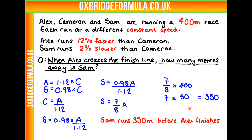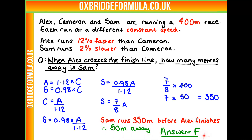So Sam runs 350m when Alex finishes the race. That means Sam is only 50m away. That's our final answer — answer F.